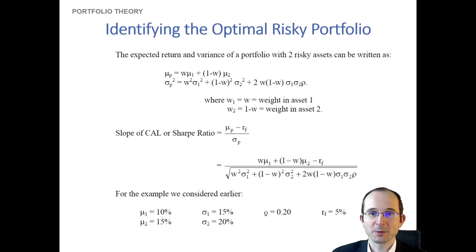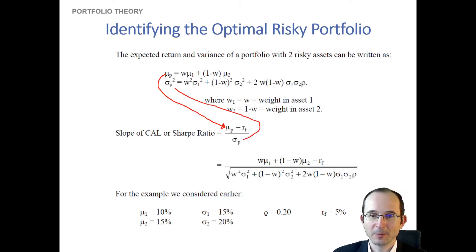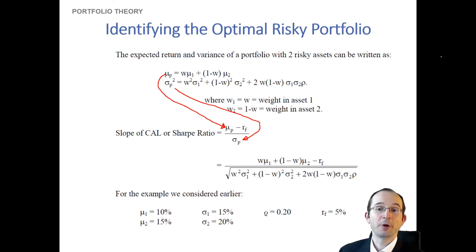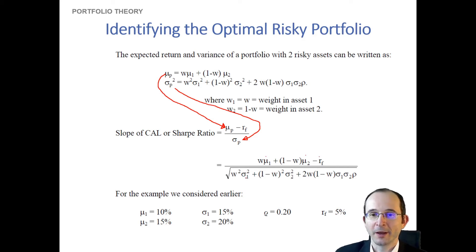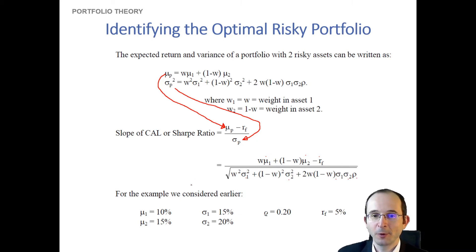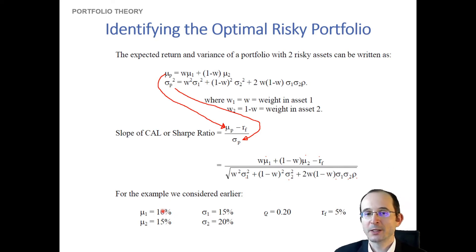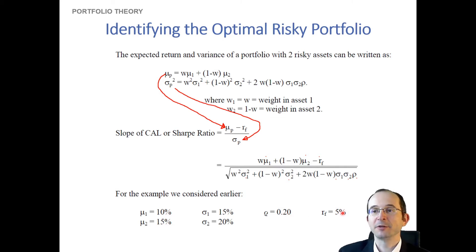We can plug in our formulas for expected return and standard deviation to express the Sharpe ratio in terms of the primitive inputs. The specific example uses: standard deviation of asset one = 15%, asset two = 20%, expected return of asset one = 10%, asset two = 15%, correlation = 0.2, and a risk-free rate of 5%.